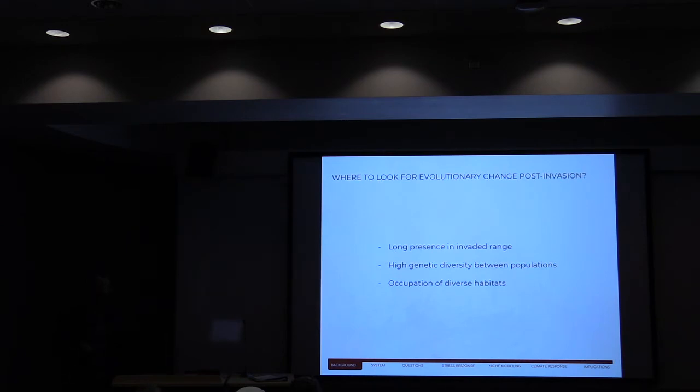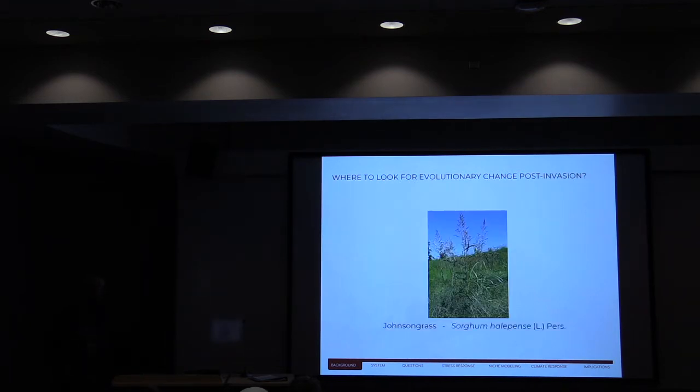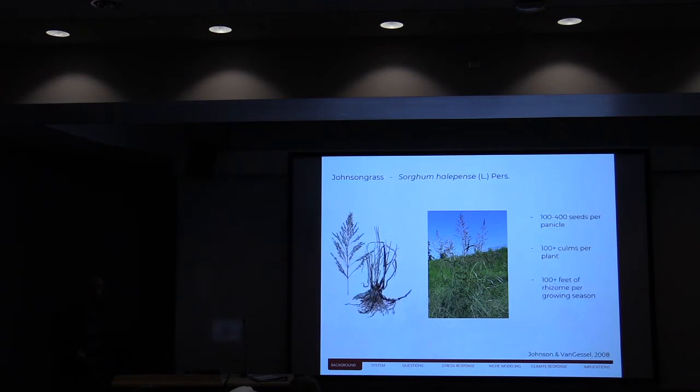First of all, it would help if the invader has had a long presence in the invaded range. It would also help if the invader has high genetic diversity between populations. And then it would also be useful for us if that invader occupies a diverse variety of habitat. We're going to do that using Johnson grass. Johnson grass satisfies those criteria. Johnson grass is a perennial herb that's invasive in North America.